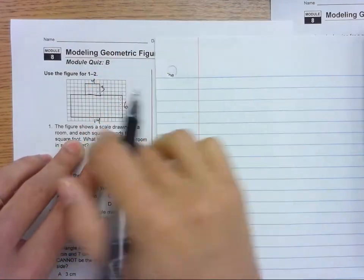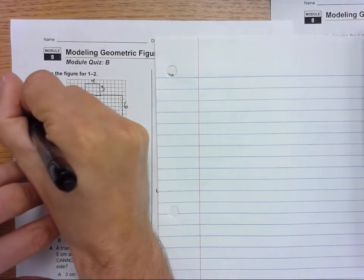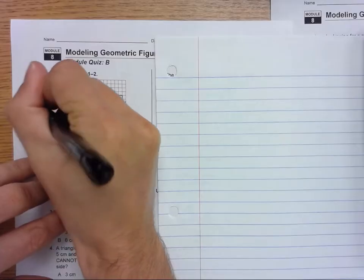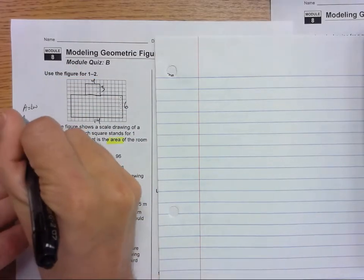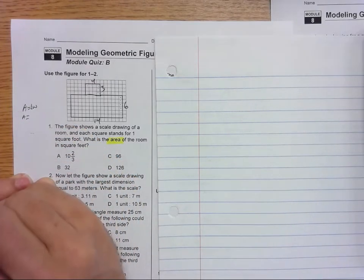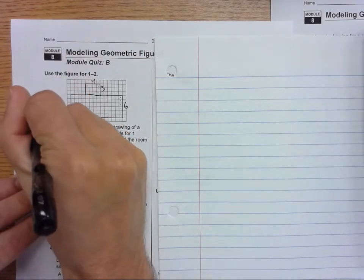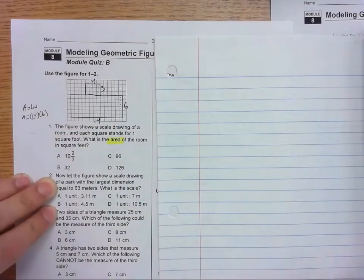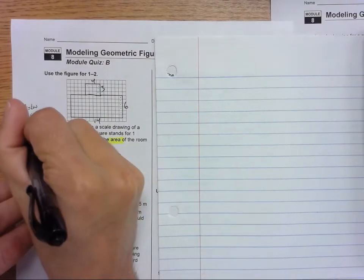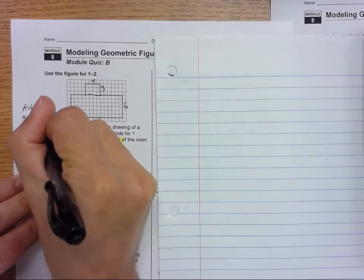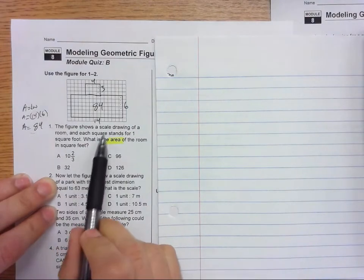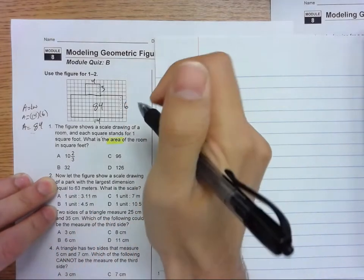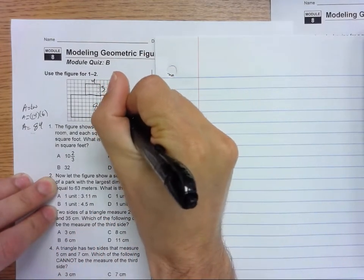So the area here: area equals length times width, and then area equals 14 times 6, and 14 times 6, so the area there is 84. This area has an area of 84 square feet.